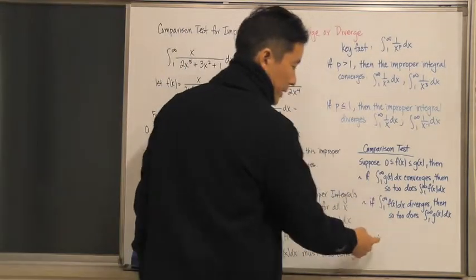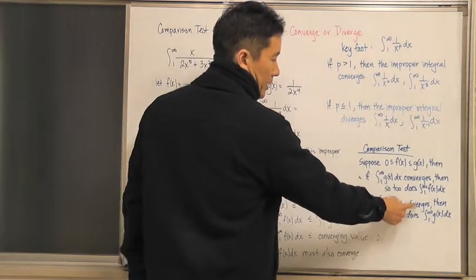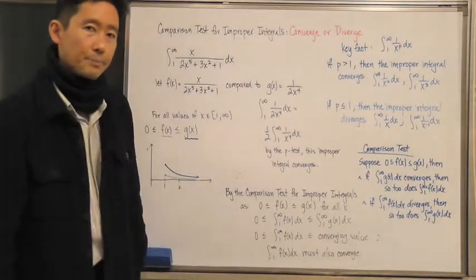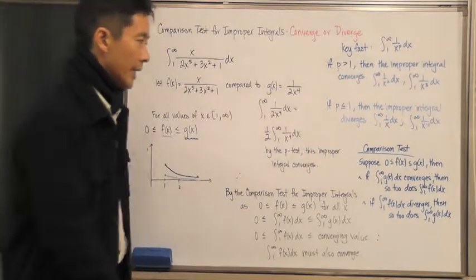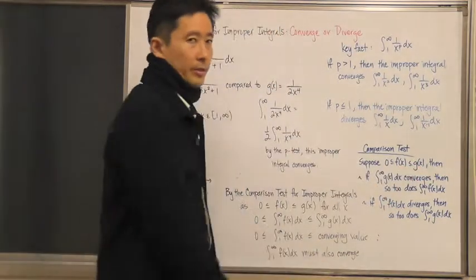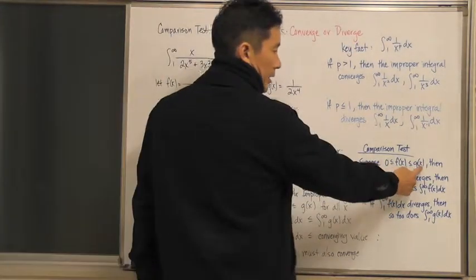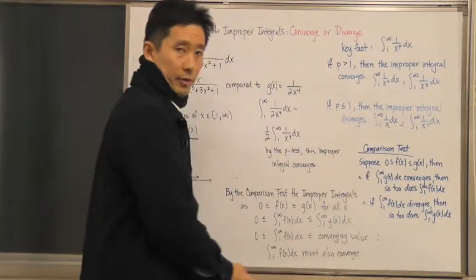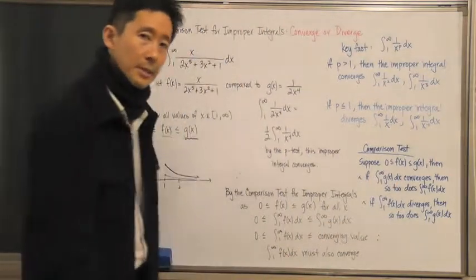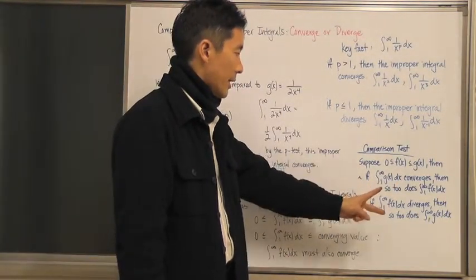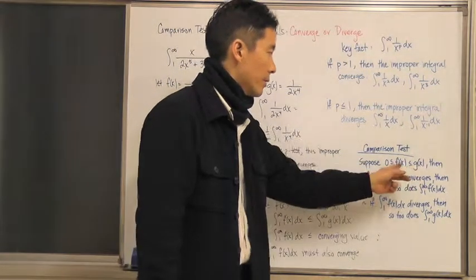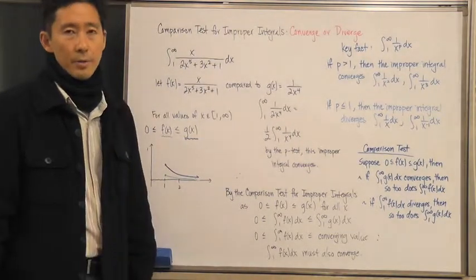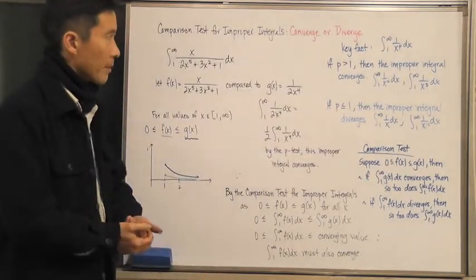Now the other situation: if the integral from 1 to infinity of f(x) dx diverges, then the integral from 1 to infinity of g(x) dx must diverge as well. One thing to be careful of: don't choose a g(x) that diverges, because if g(x) diverges, we can't conclude anything about f(x). Similarly, don't choose an f(x) that converges, because then we can't conclude anything about g(x). It's very important to choose the appropriate f(x) and g(x) to draw valid conclusions.